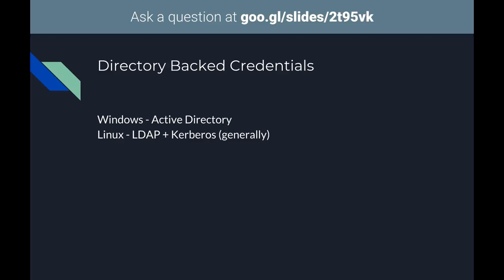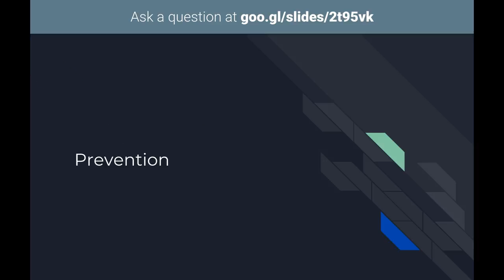Lastly for access control, there are directory-backed credentials. When you're on the UTD network, you want to log in at any workstation with the same credentials — that's a directory-backed system. On Windows this is Active Directory; on Linux it's some mixture of LDAP plus Kerberos. If you're into Windows hacking, you really need to know Active Directory because it will be there in almost every corporate environment you touch.